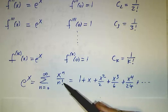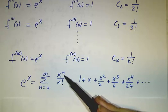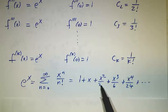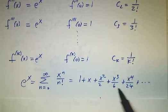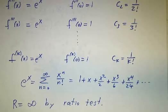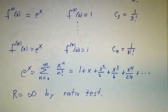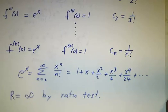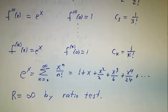The nth coefficient is 1 over n factorial multiplied by x to the n: 1 plus x plus x squared over 2 plus x cubed over 3 factorial plus x to the fourth over 4 factorial, and so on. If you apply the ratio test, you can see that the radius of convergence is infinite — this series converges to e to the x no matter how big or small x is.